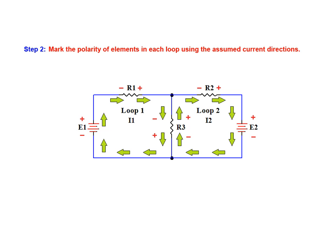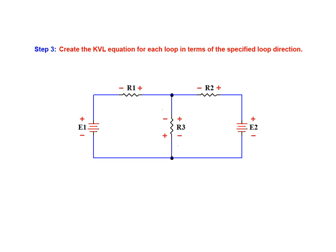With polarity determined in terms of the selected loop current directions, we are now ready to move on to step 3. In this step, we construct the Kirchhoff's voltage law equations for each loop in the circuit. Starting in the upper left-hand corner of loop 1, we travel clockwise to create the KVL equation. When you travel from the negative end of an element to the positive end, the voltage is considered positive and is added. Inversely, if you travel from positive to negative, the voltage is subtracted in the KVL equation.